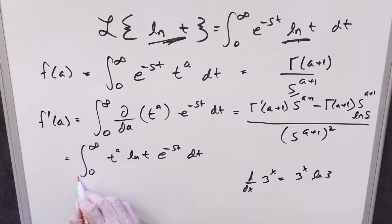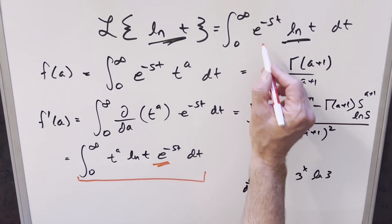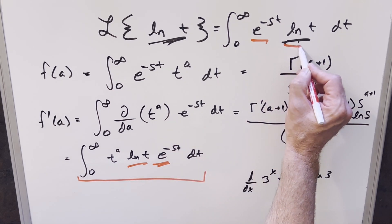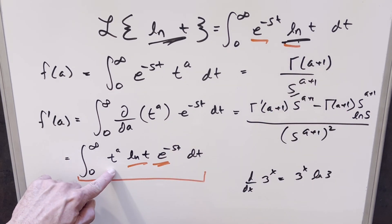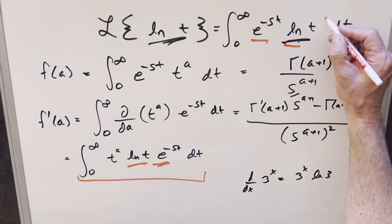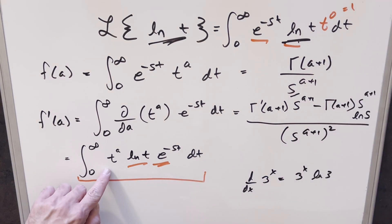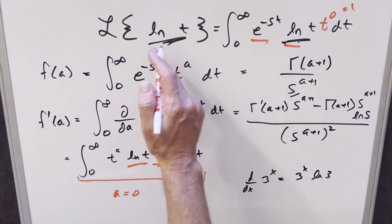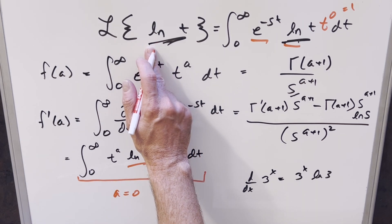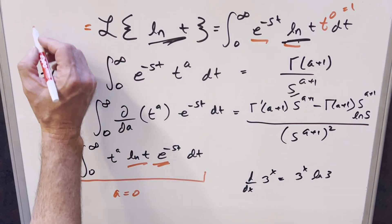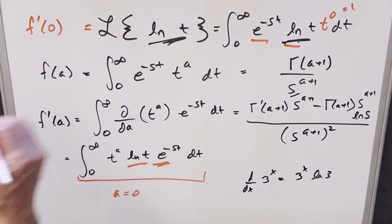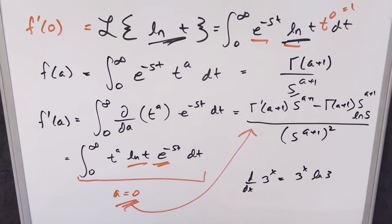But now the thing to notice with what we found here for our f prime a value is it's really similar to what we have here. We've got e minus st in common. We've got ln t in common. We don't have t to the a in our original problem. But if you think of it like if we create t to the 0 right there, that's just the same thing as 1. So when a is equal to 0 here, that is going to get us back to our goal, the Laplace transform of t. So all we need for this solution is just going to be f prime at 0. So really all we're going to need to do to finish this off is just take 0, plug it in here, and then that's going to be our answer.